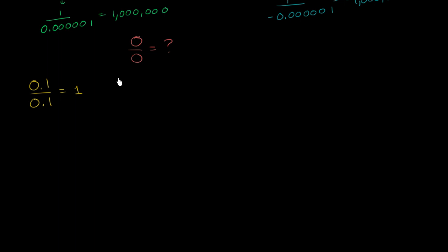Let's get even closer to 0. 0.001 divided by 0.001. Well, that also equals 1. Let's get super close to 0. 0.00001 divided by 0.00001. Well, once again, that also equals 1. And it didn't even matter whether these are positive or negative.